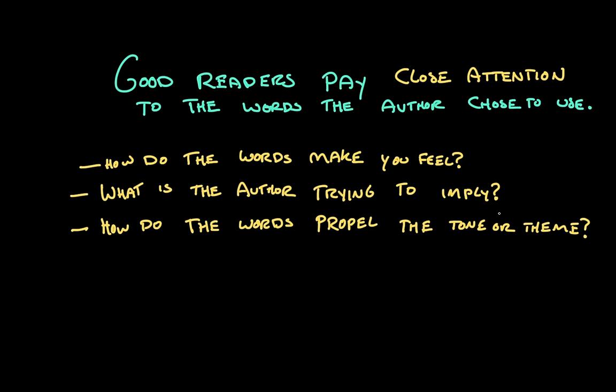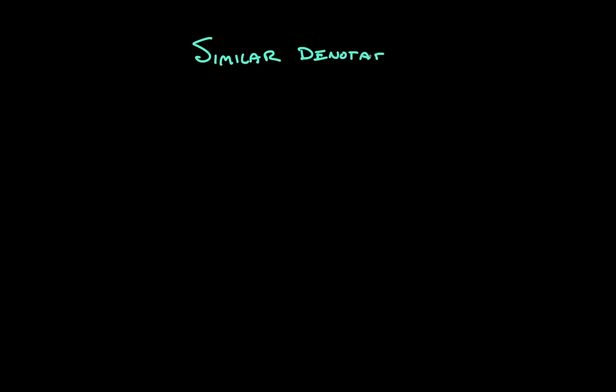So connotation is about word choice, sure, but it's also about setting a tone. One way you set tone is by expressing an opinion. Some words may have a similar denotation but very different connotations. For example, let's say I was describing someone whose behavior was nice, like they were behaving in a kindly way. The way I described that person can express how I, as a writer, feel about that behavior.